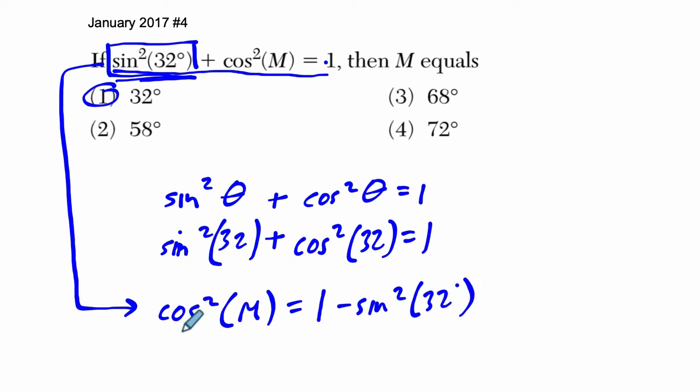And then we don't want to know what the cosine squared equals. We want to know ultimately what M equals. Let's first find the cosine of M. So take the square root on both sides.